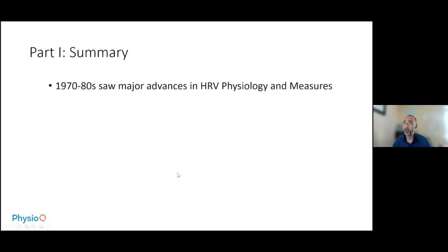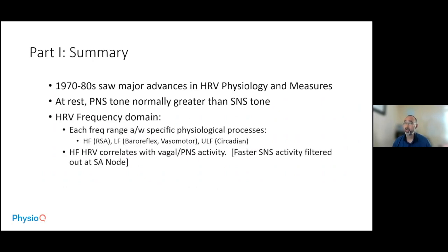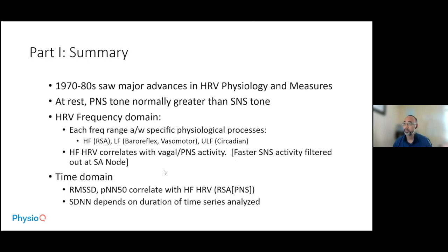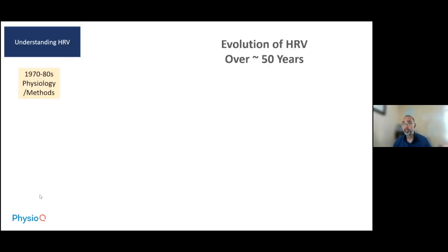The summary of part one: the 1970s–80s saw major advances in heart rate variability physiology and measures. At rest, parasympathetic nervous tone is normally greater than sympathetic tone. In the frequency domain, each frequency range is associated with a specific physiologic process, and high-frequency heart rate variability correlates with the vagal parasympathetic nervous system. In the time domain, RMSSD and pNN50 correlate with high-frequency heart rate variability, while the standard deviation of NN intervals depends on the duration of the time series analyzed.